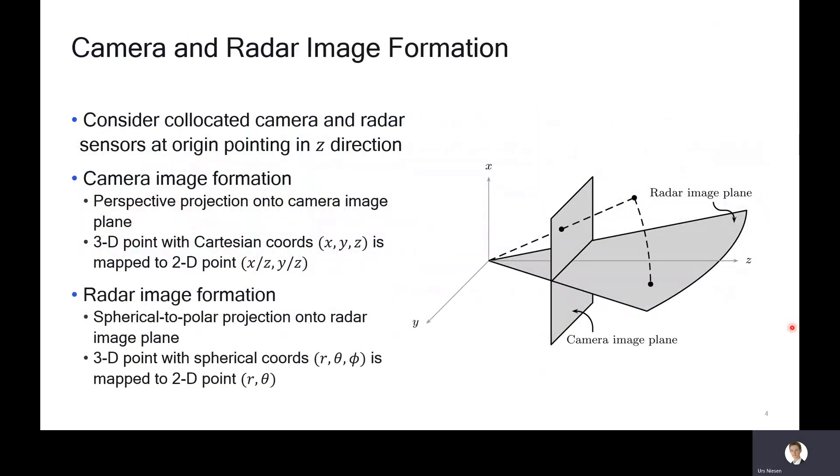Let me talk more about how these camera and radar images come about. Consider a co-located camera and radar sensor at the origin pointing in the z direction. Camera image formation is well known. If you have a 3D point, it is mapped by a perspective projection onto the camera image plane. Formally, the 3D point with Cartesian coordinates x, y, z is mapped to the 2D point x divided by z, y divided by z, assuming an ideal camera model.